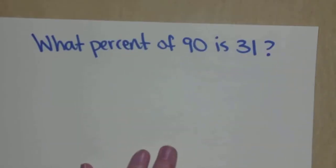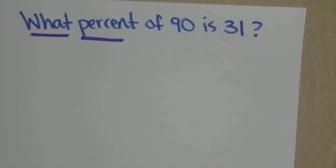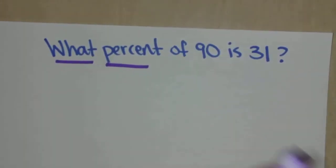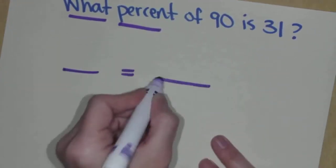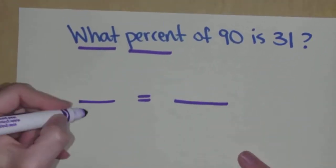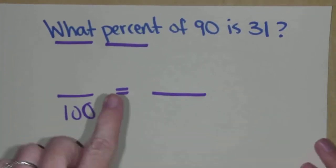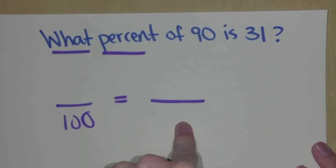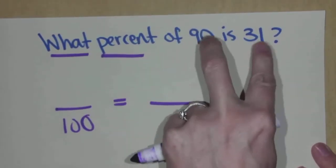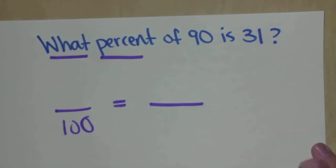We'll do one more. This time we're looking for something different. This time it says what percent? What percent of 90 is 31? Set it up. Blank equals blank. 100. Always. That's the template. You should only have one, two, three spots to fill in. See how you have two numbers and an X for the unknown?